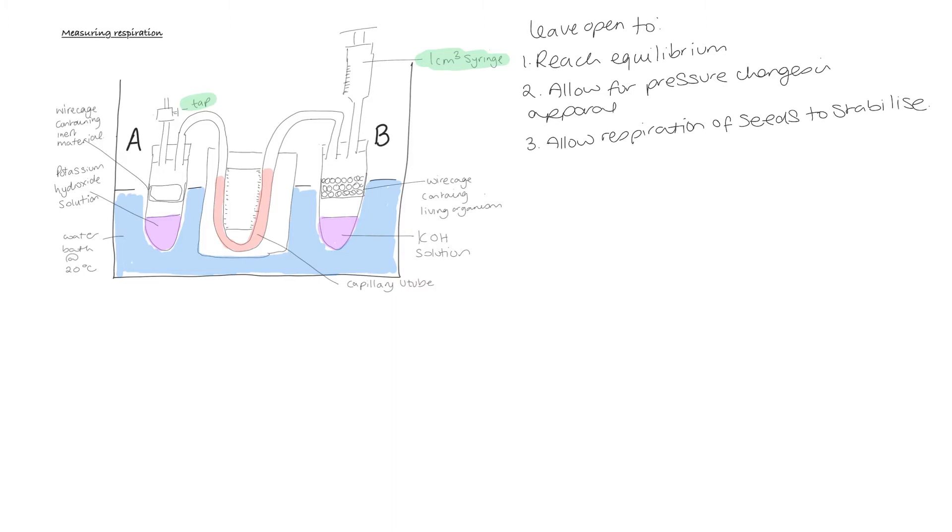Why did we choose 20 degrees? 20 degrees is about right for the optimum growth rate of the seeds, which is what we want, and about right for the optimum temperature for the enzymes that are involved in respiration in plants. So, we would change the temperature of this water bath depending on the type of organism that we were using.